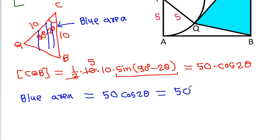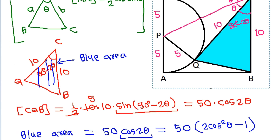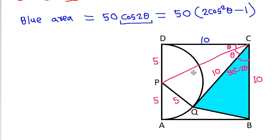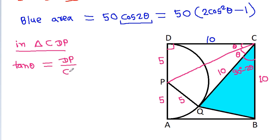The area of triangle CQB is 50 times cos(2θ), and cos(2θ) equals 2cos²θ minus 1. Now, in triangle CDP, the angle at D is 90 degrees because ABCD is a square. So tan(θ) equals DP divided by CD, which is 5 divided by 10, giving tan(θ) = 1/2.